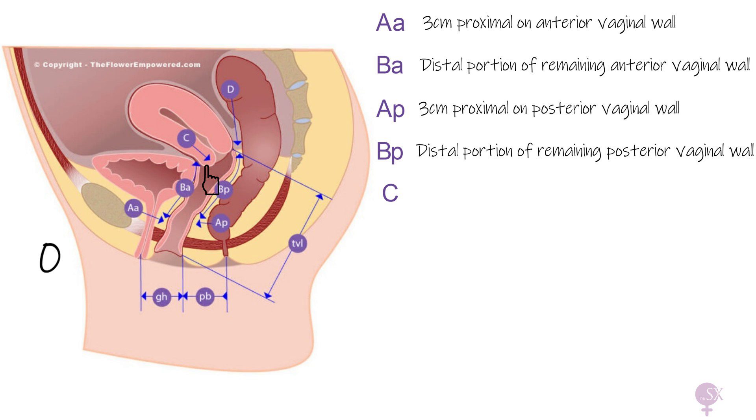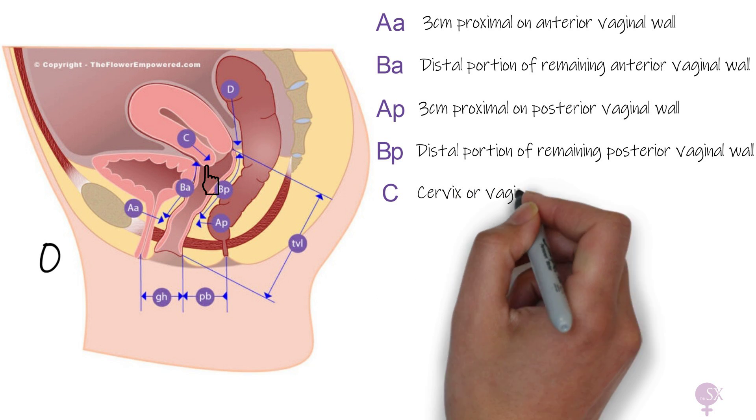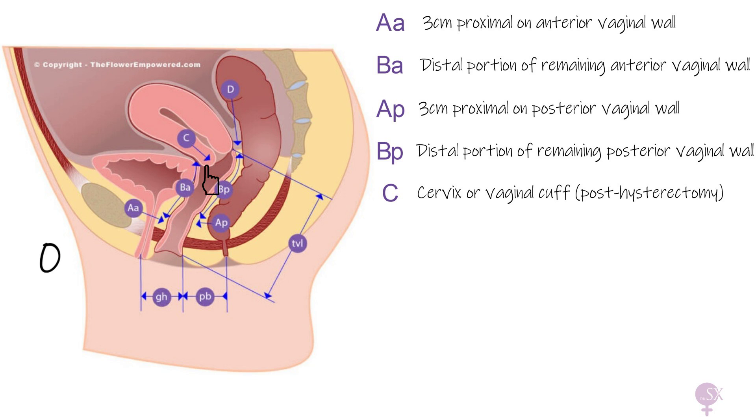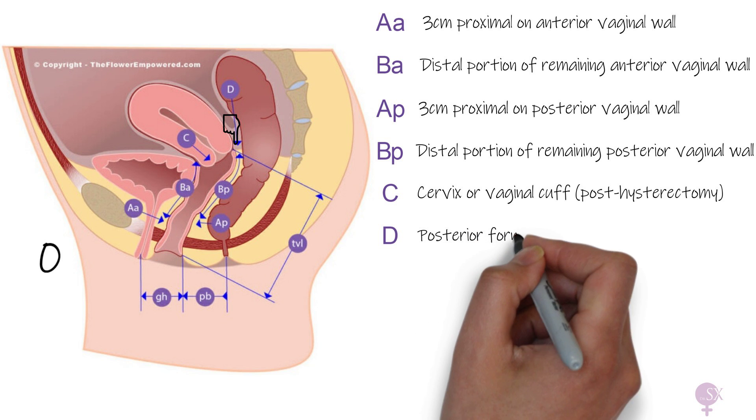C refers to the lowest edge of the cervix or a vaginal cuff following a hysterectomy, so this can range from minus ten to seven or eight. D refers to the posterior fornix if the uterus is present, and this is usually two to three centimeters above point C. This is excluded if the patient has had a hysterectomy.